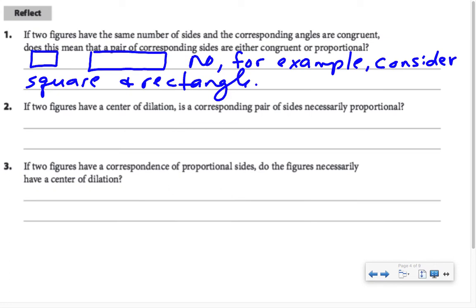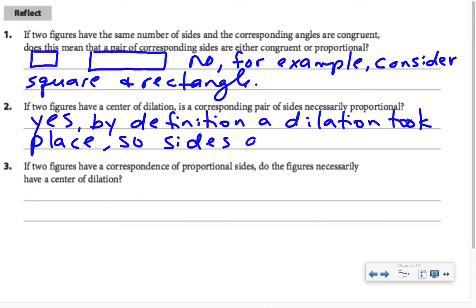If two figures have a center of dilation, is a corresponding pair of sides necessarily proportional? Well, if two figures have a center of dilation, by definition, a dilation took place, so sides would be proportional. If two figures have a correspondence of proportional sides, do the figures necessarily have a center of dilation? Not necessarily. For example, if I have a picture and I upload it and my printer prints an enlarged version of it, there was no center of the dilation, they just used the measurements to create the dilation.